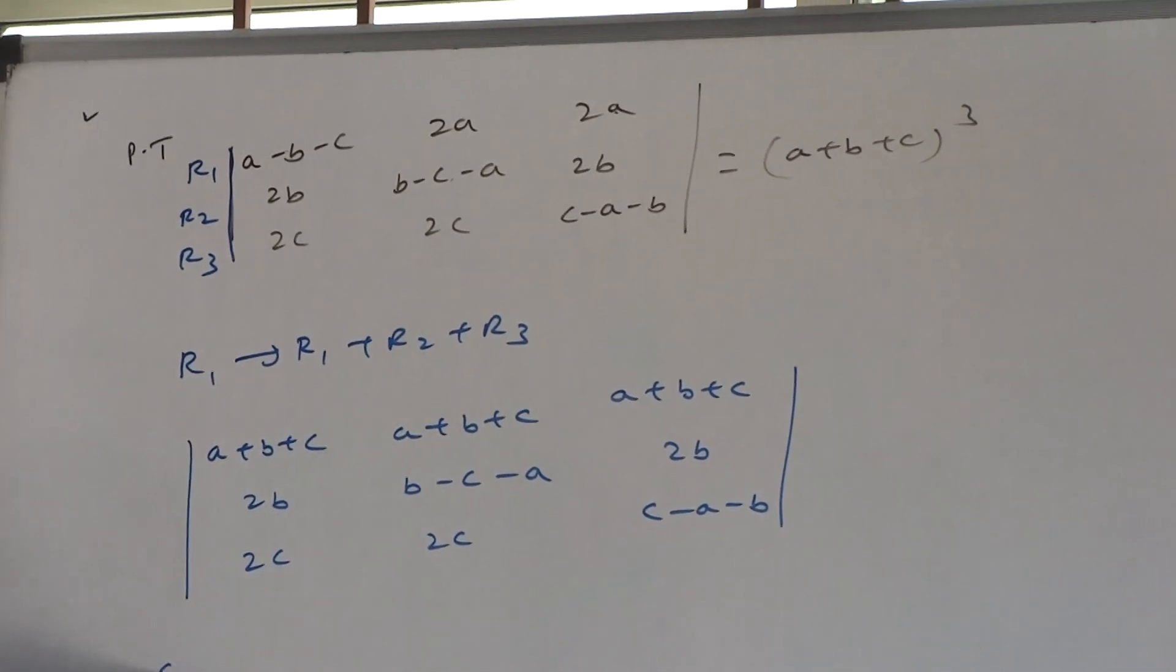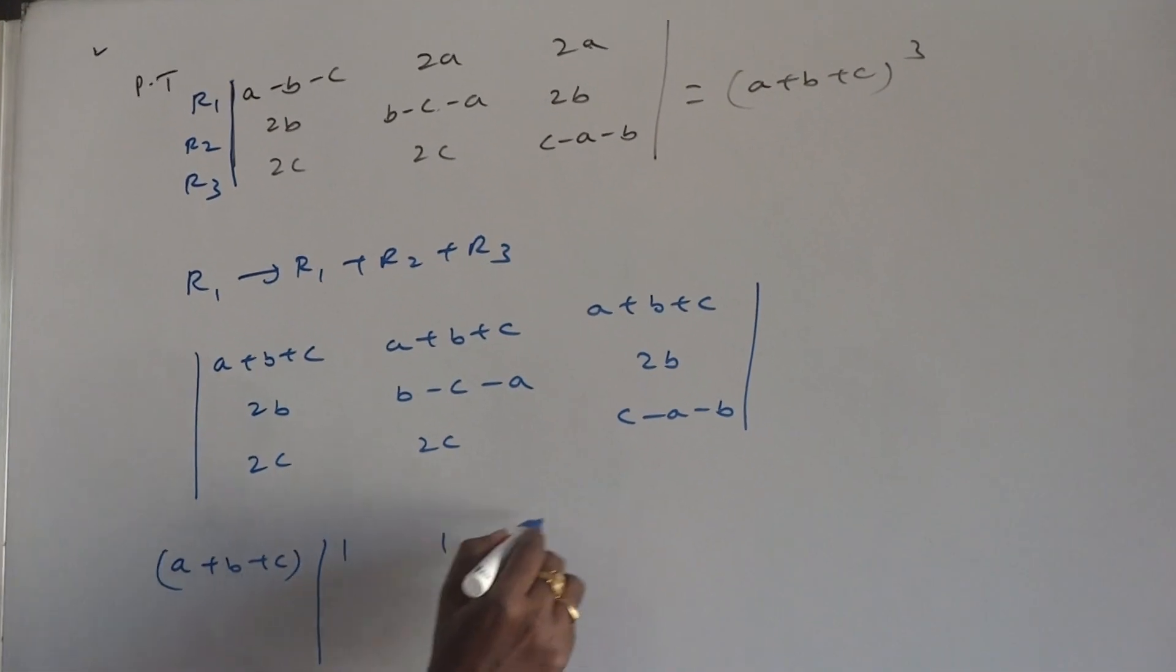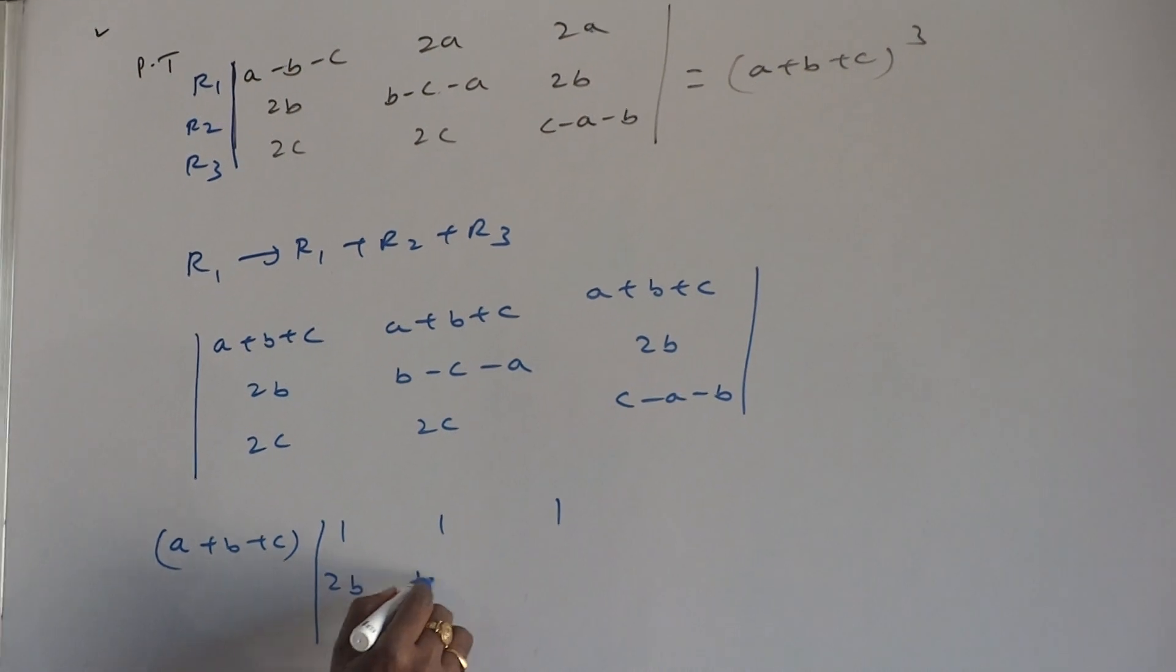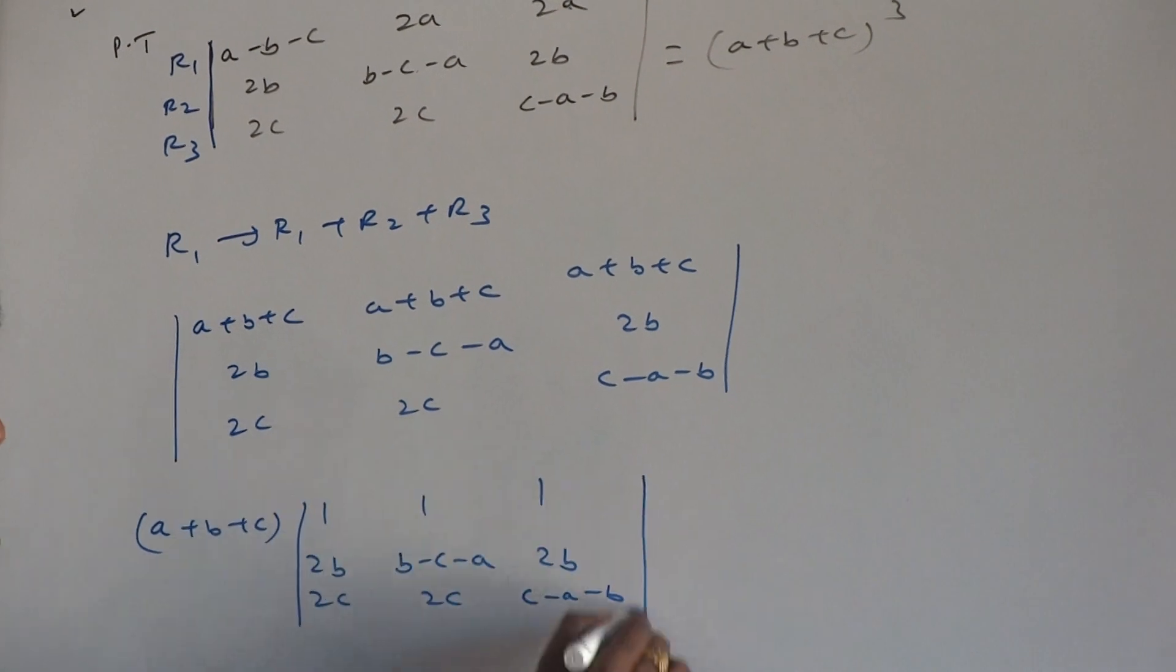Take from first row A plus B plus C common. And what is left? 1, 1, 1. 2B, B minus C minus A, 2B. 2C, 2C, C minus A minus B.